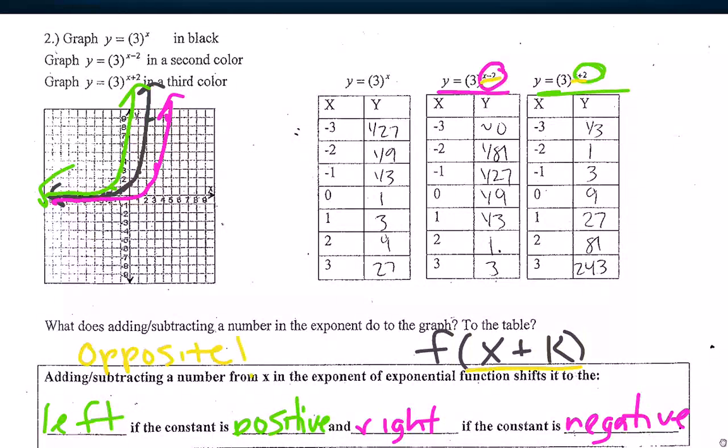So that means it's going to move left if k is positive. And it's going to move right if k is negative.